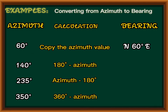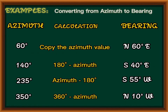180 degrees minus 140 degrees equals 40 degrees. Since 140 degrees is in quadrant 2, the bearing is S40°E. Then 235 degrees minus 180 degrees equals 55 degrees. Since 235 degrees is in quadrant 3, the bearing is S55°W. Then 350 degrees is in quadrant 4, so the bearing is N10°W.